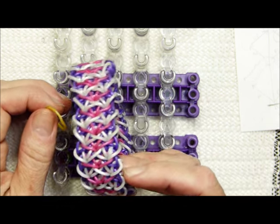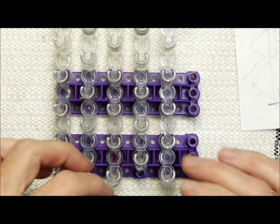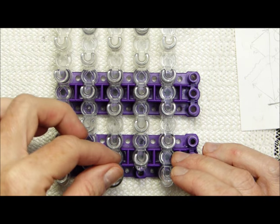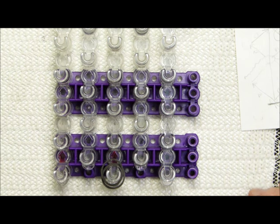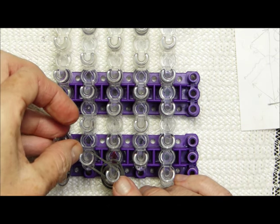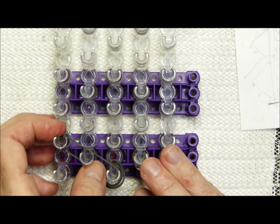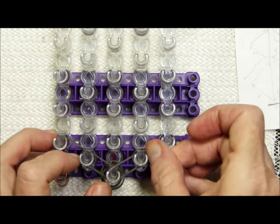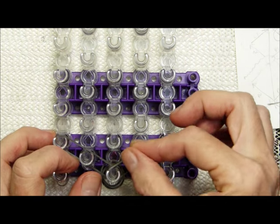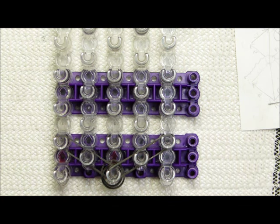So to get started, we'll place the two bands that we're going to use for connecting right here. And then we will take our A band, A colored band, and place one here, and here, and here, and do the same on this side.